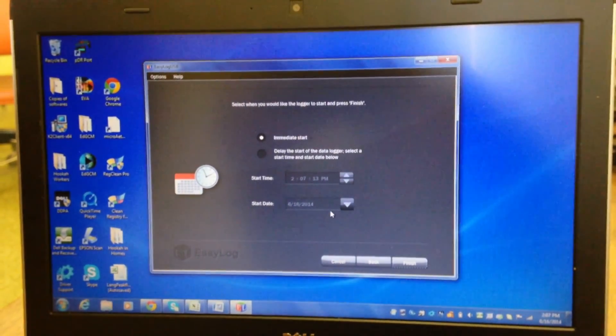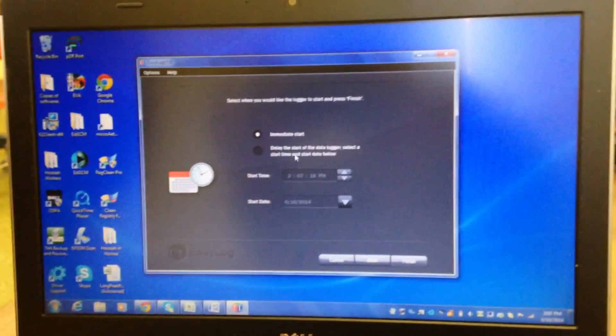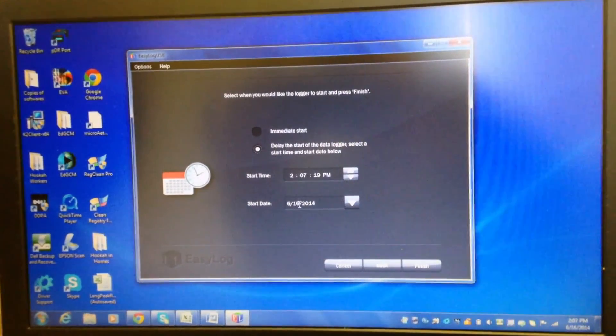In order to turn the monitor off, insert it back into the USB port and select the stop monitor icon. Your data will then be uploaded and can be exported onto Excel.